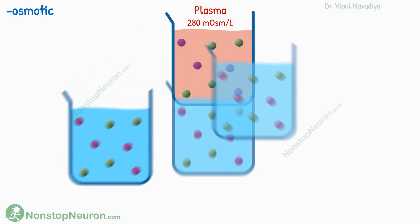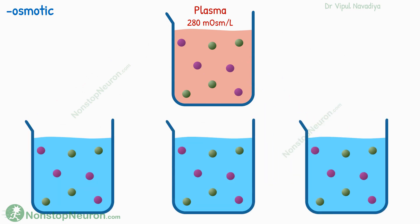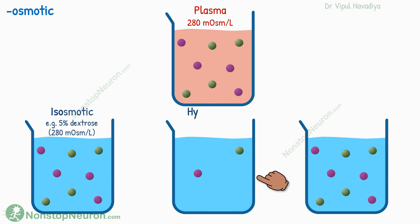Different solutions can have different osmolarity. If the other solution has the same number of solutes per unit volume as plasma, it's called isoosmotic — for example, 5% dextrose. If there are fewer solutes, it's called hypoosmotic — for example, half normal saline.